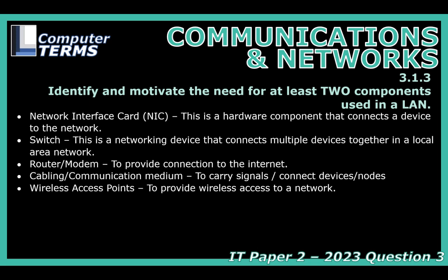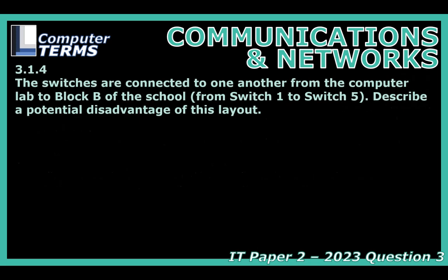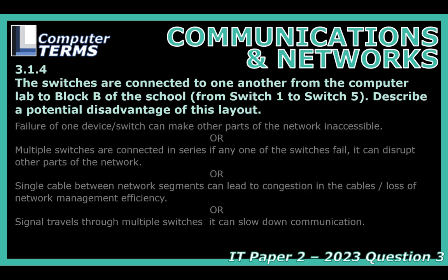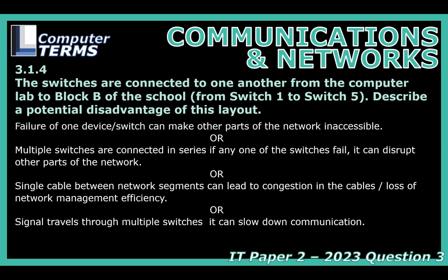Now let's imagine a specific school setup where the network switches are connected one after another in series, like a chain. Switch one is in the computer lab, connects to switch two, which connects to switch three, all the way to switch five in block B. What's the potential downside of connecting them in a straight line? That setup immediately flags a vulnerability — it's like those old Christmas tree lights. If one switch in the chain, say switch three in the middle, fails or loses power, then everything further down the line gets cut off. Switches four and five, and all the computers connected to them, could lose their network connection completely — a single point of failure takes out a whole section.